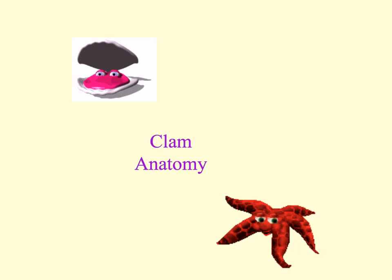The clam is in the class Bivalvia, or Pelecypoda. This class includes the clam, the oyster, mollusk, mussels, and scallops. They typically have unsegmented soft bodies, characteristic of this particular phylum. The body is enclosed by two calcium carbonate shells that are hinged dorsally, the body is laterally compressed, and the foot is wedge-shaped. This is where it gets the name Pelecypoda, which means hatchet foot.